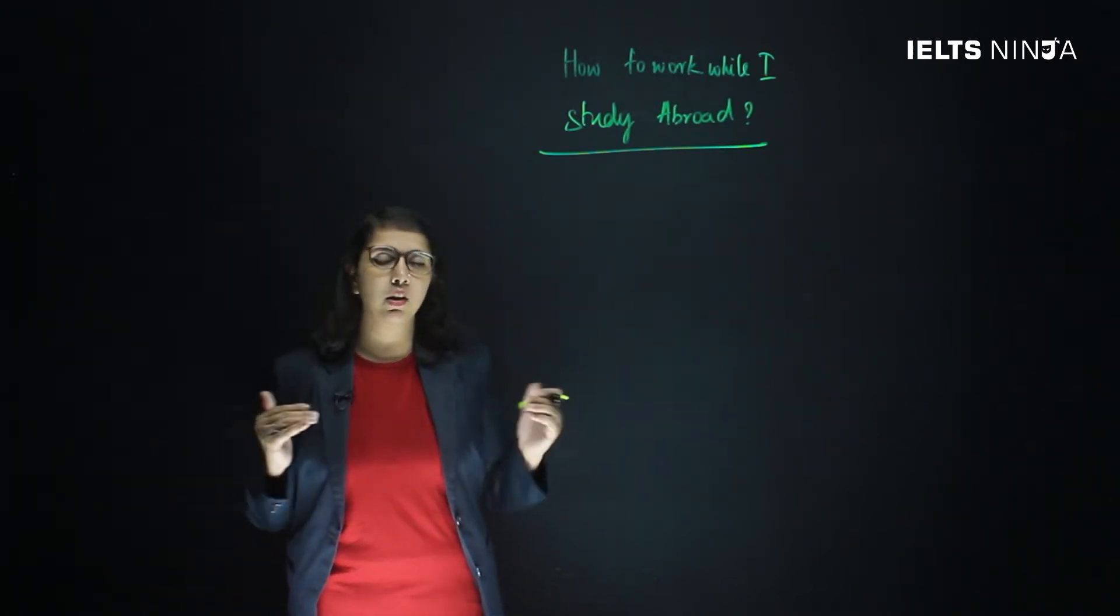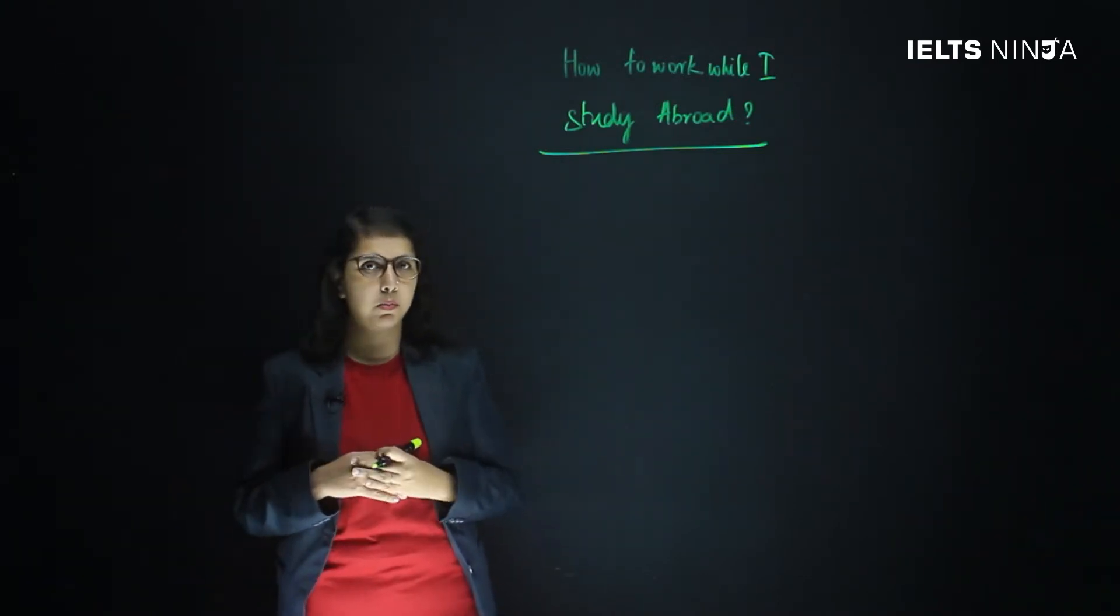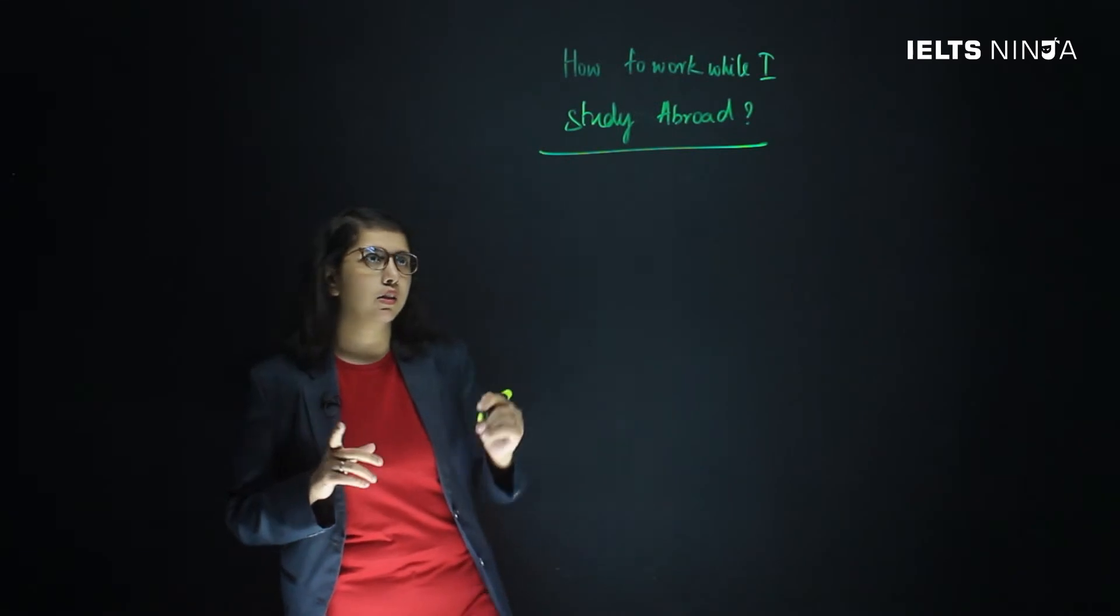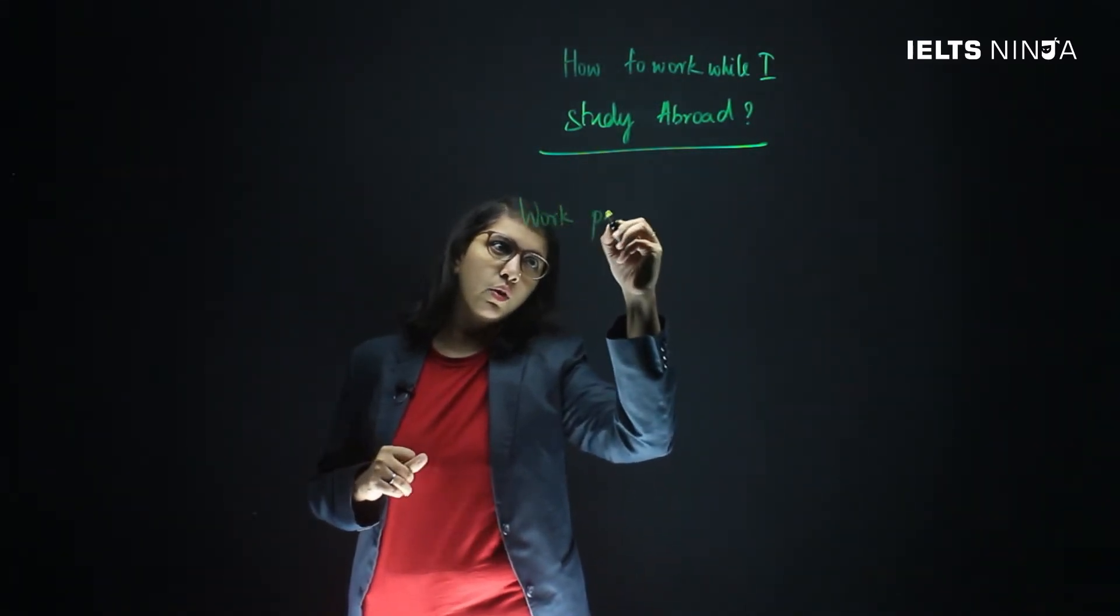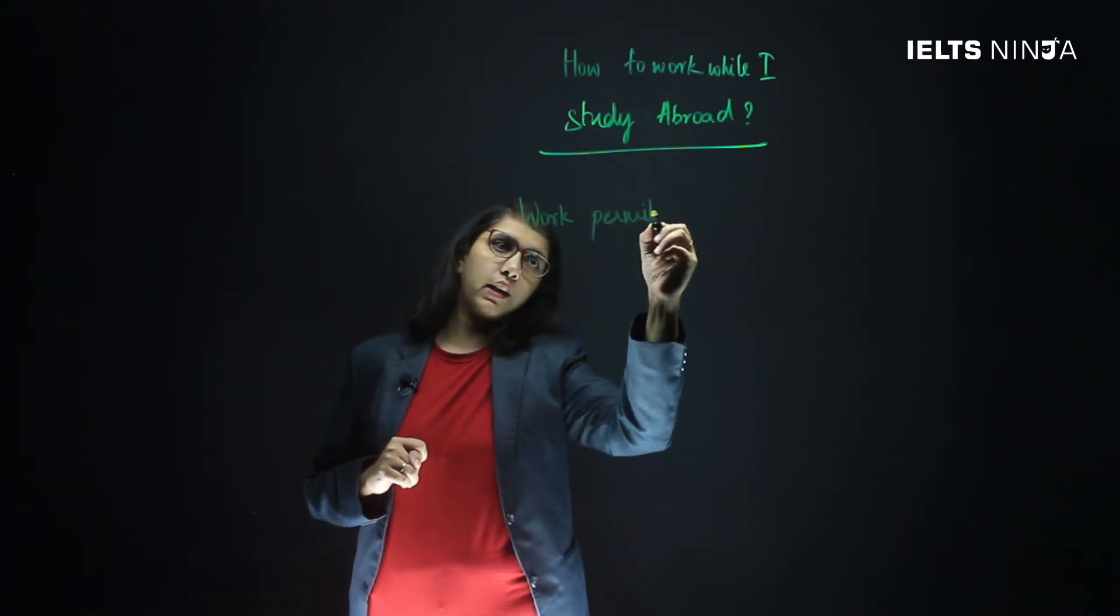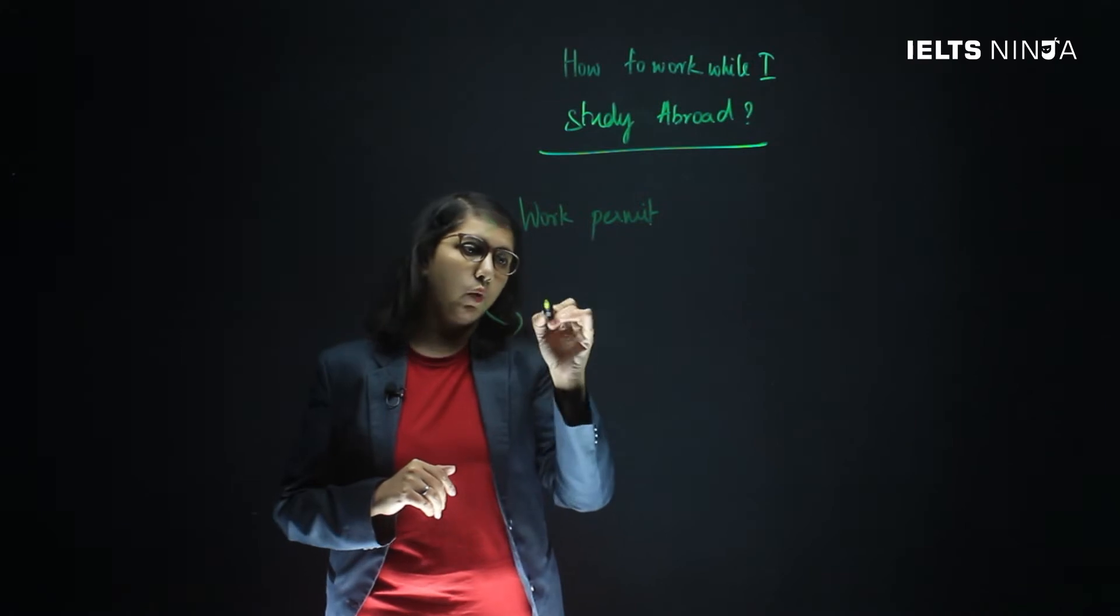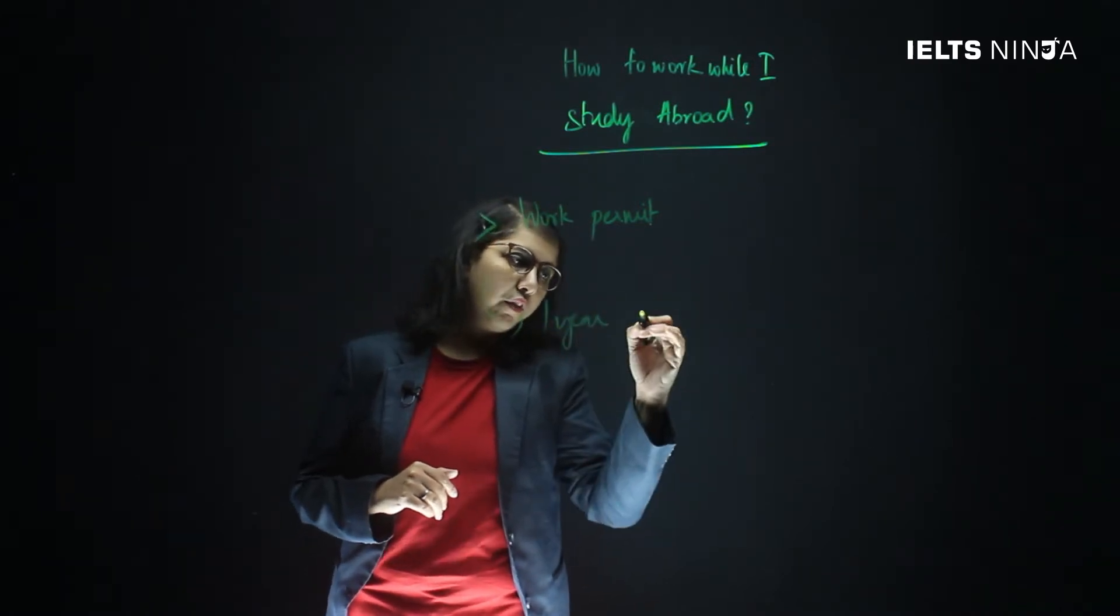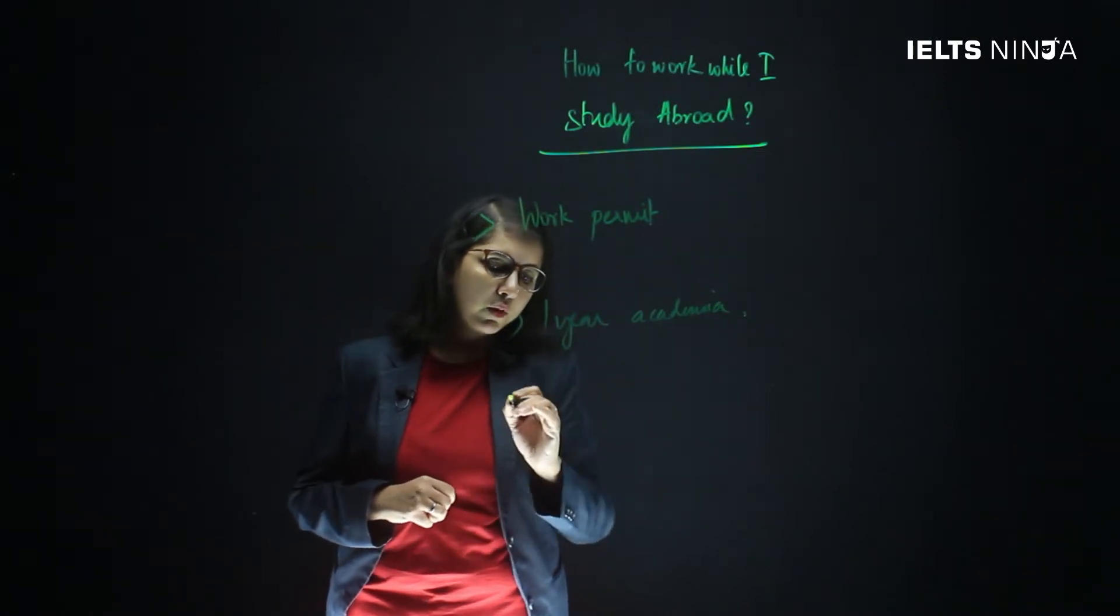First, let us look at the countries that do allow and what is the minimum requirement in order for you to get a work permit. In order to get a work permit, which is going to be a mandatory requirement for working in a foreign country, you will have to have completed at least one year of academia, and you will be able to work up to 20 hours.